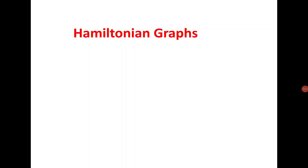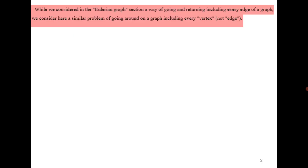Good morning everyone. Today we are going to talk about Hamiltonian graphs. Recall that in the last class we were discussing Eulerian graphs, where we were looking for a closed trail or a circuit passing through all the edges. Now instead of passing through all the edges, we are trying to look for a cycle passing through all the vertices. In Eulerian graphs, vertices can be repeated but there was no repetition of edges. In this case, we are not going to allow the repetition of vertices.